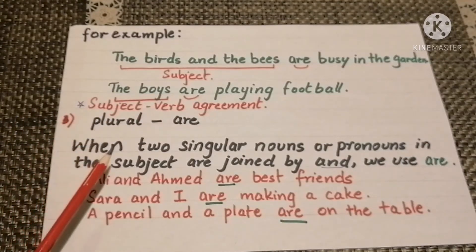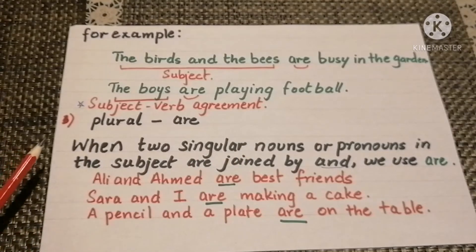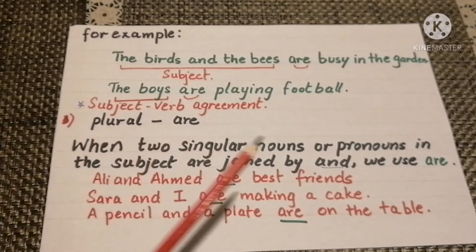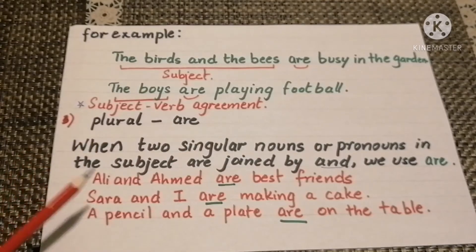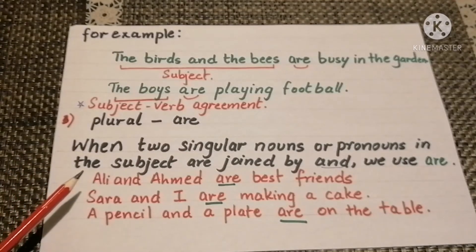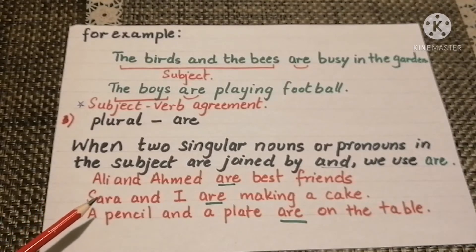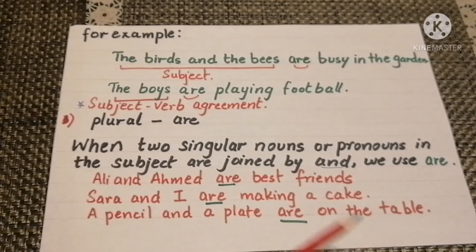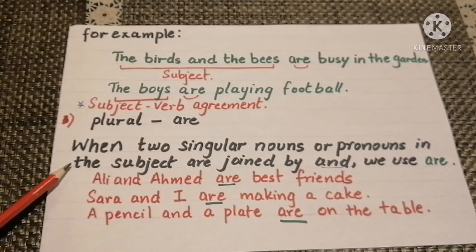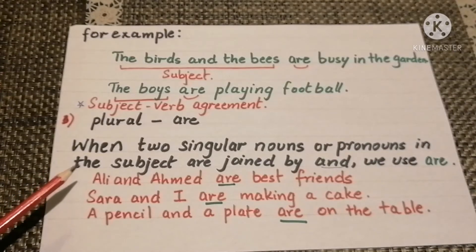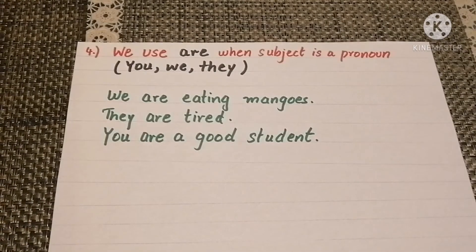Subject-verb agreement: when the subject is plural we use 'are' as a helping verb. When two singular nouns, pronouns, or a noun and a pronoun in the subject are joined by 'and,' we use 'are' to complete the sentence. For example: Ali and Ahmad are best friends, Sara and I are making a cake, a pencil and a plate are on the table. When two singular nouns or pronouns are joined by 'and,' we use 'are.'